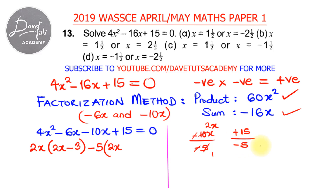And 15 divided by minus 5: a positive number divided by a negative number is negative. 5 goes into 15 three times, so this gives minus 3.